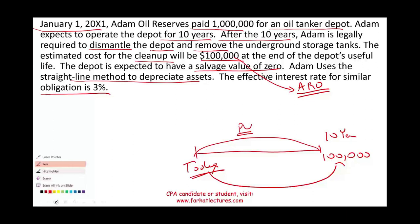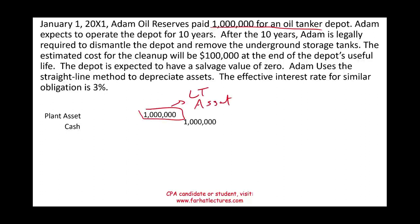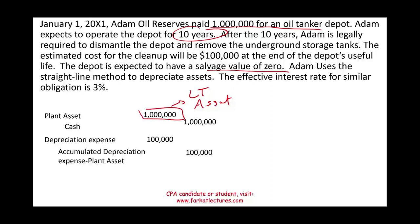Let's start with the easy part: computing the asset. We paid a million dollars for the oil tanker, so we debit the plant asset for a million dollars and credit cash for a million dollars. This is a long-term asset that's going to last 10 years with no salvage value, so we depreciate it. Using straight-line over 10 years: debit depreciation expense $100,000, credit accumulated depreciation — plant asset — $100,000.